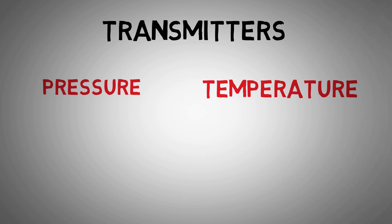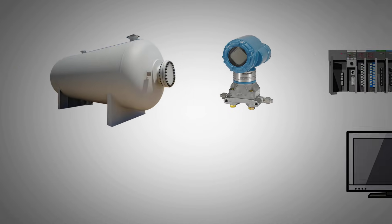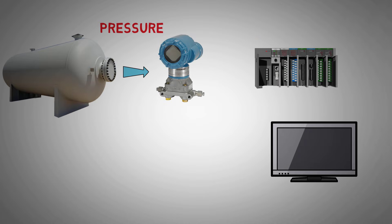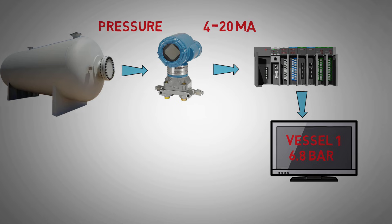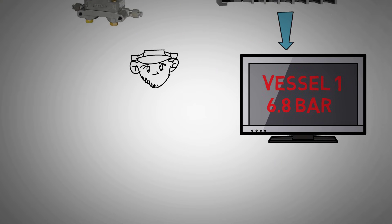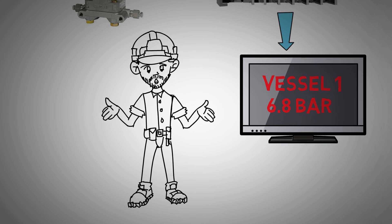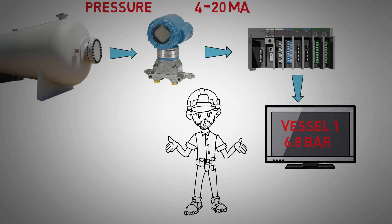As we learnt in the transmitter lesson, instrumentation is measuring the real-life conditions of a plant's process. Let's take an electronic pressure transmitter that is measuring the pressure inside a vessel. The instrument is connected to the site's control system via a 4-20mA current signal. The control system then gives a readout to our control room operator so we can monitor and know the exact state of the plant. But how does the control room operator know that the pressure he is seeing on his screen is the exact pressure that is in the vessel?